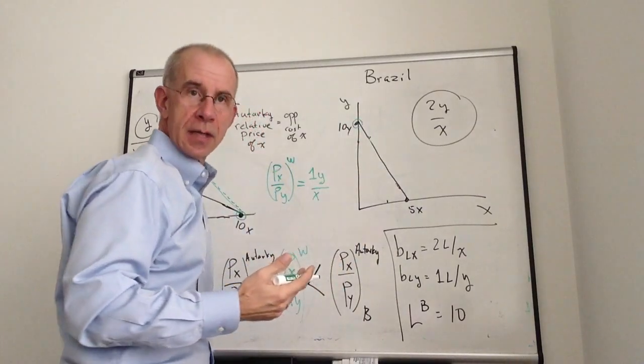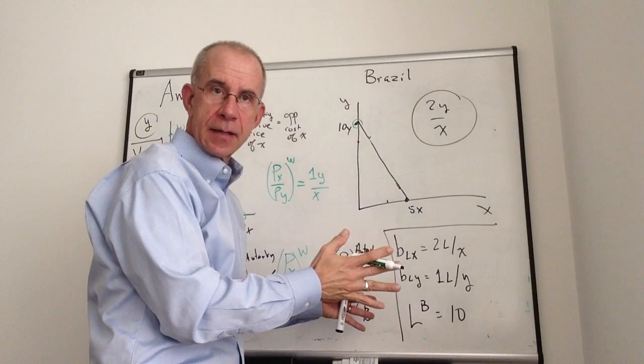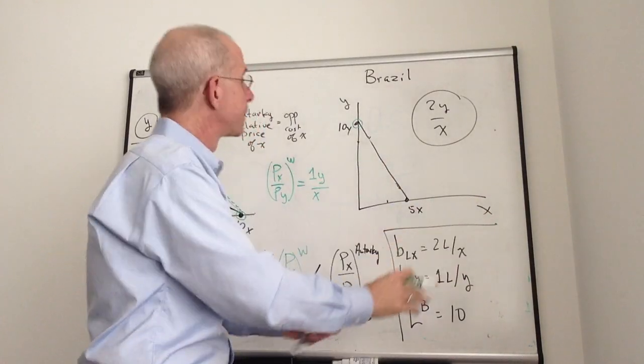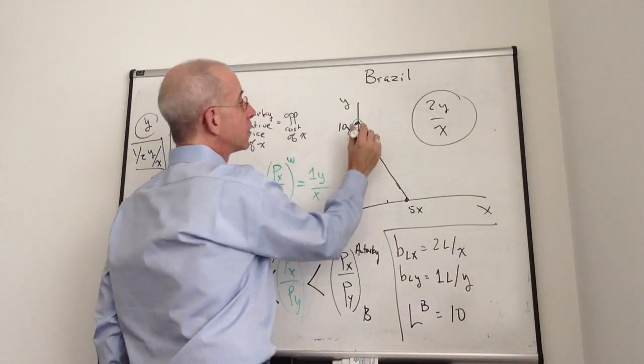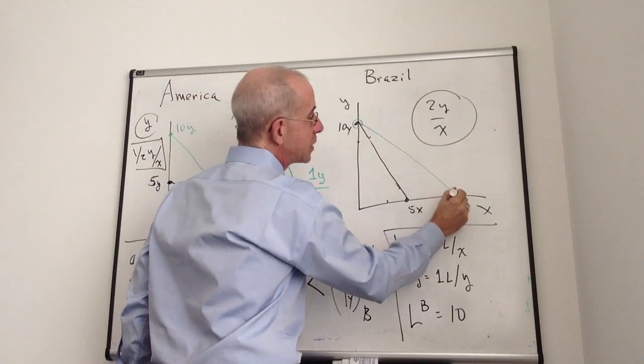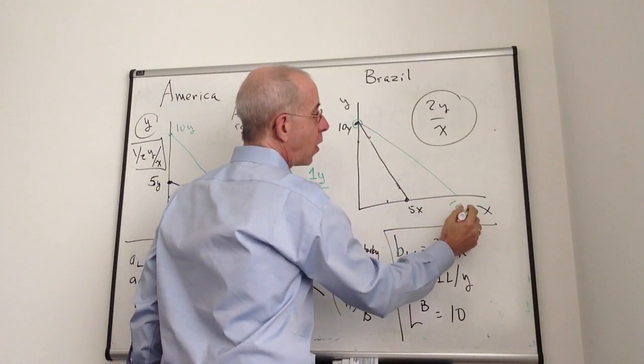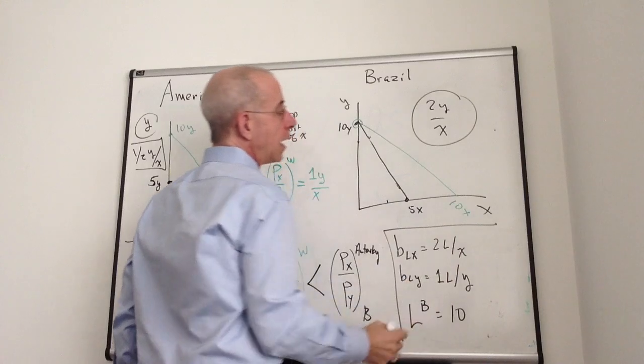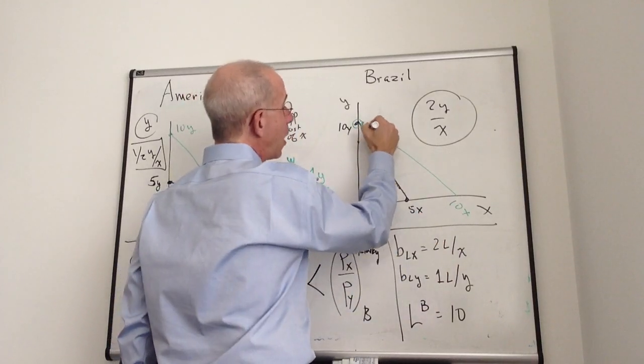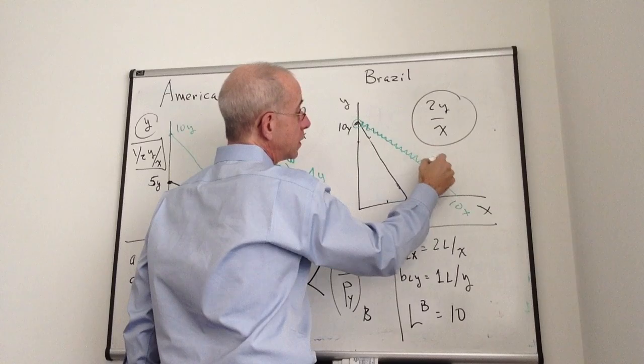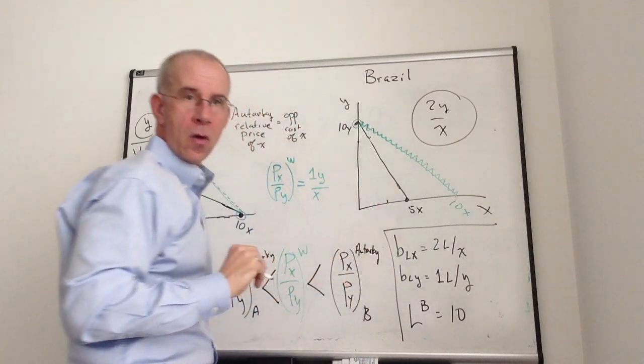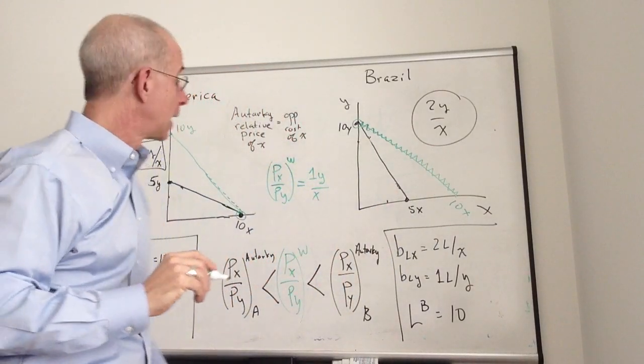Let's suppose that they completely specialize in Y. They take all the resources out of X, put everything into Y. With those ten units of Y, they would potentially be able to sell all units and get ten units of X in return, able to consume somewhere along that line.